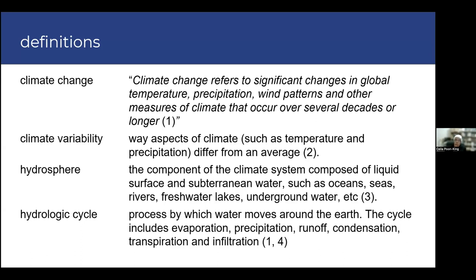Climate variability, on the other hand, talks about aspects of climate such as temperature and precipitation and how they differ from an average. The hydrosphere is the component of the climate system composed of liquid surface and subterranean water, such as oceans, seas, rivers, freshwater lakes, underground water, and water vapor. The hydrologic cycle is the process by which that water moves around the earth, including evaporation, precipitation, runoff, condensation, transpiration, and infiltration.